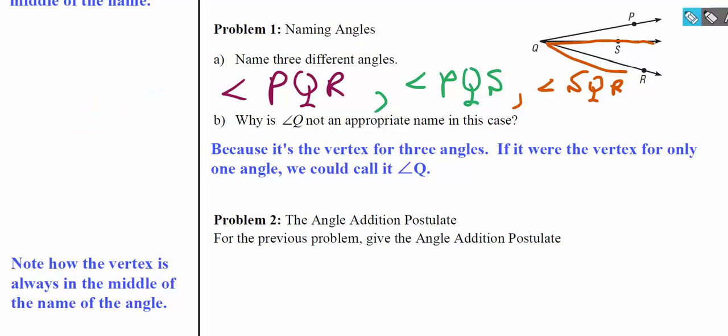But note that we didn't name any of these angles angle Q. That's because it's not appropriate since I have three angles that share the same vertex. If I say angle Q, which one are we talking about? We don't know. To play it safe, we'll name these angles by all three points.